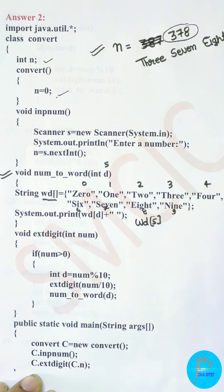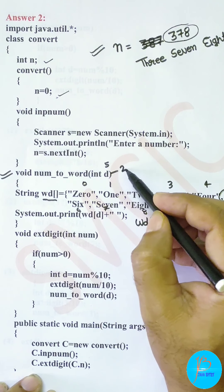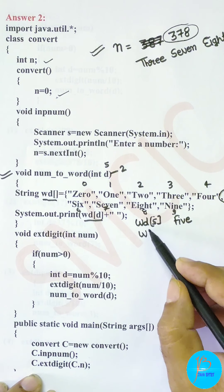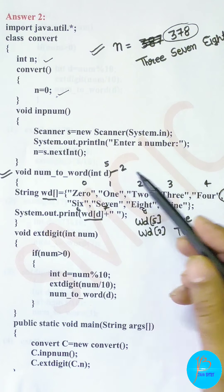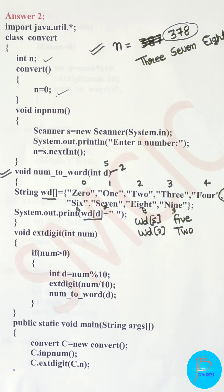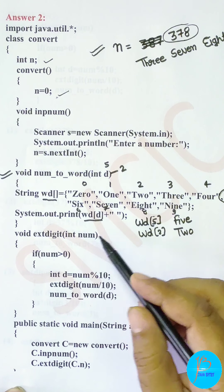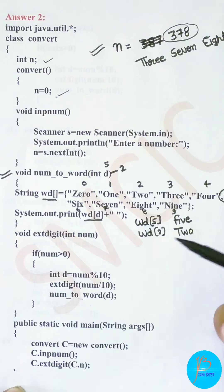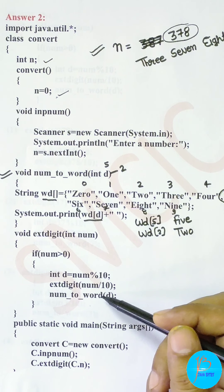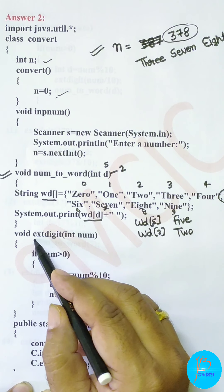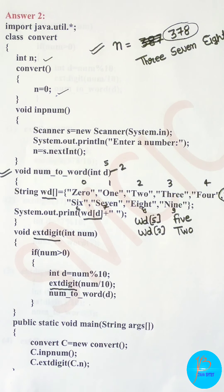So System.out.print(wd[d]) - whatever value you pass in d, it goes to that index of the wd array and prints the corresponding word. For example if d is 5, it prints 'five'; if d is 2, it prints wd[2] which is 'two'. Next, the function void extDigit - extract digit - takes a number as parameter and extracts each digit one by one using recursive technique. Notice the function calls itself inside its own body - it's a recursive function.